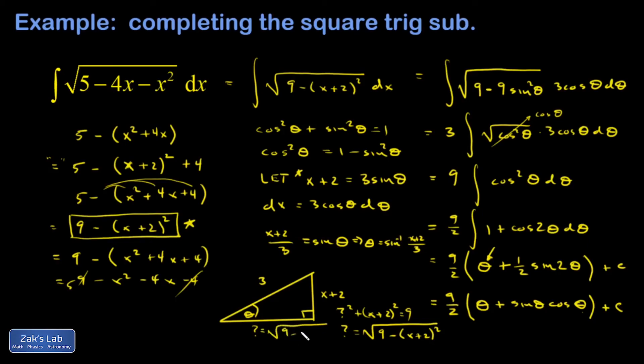That adjacent side is just √[9 - (x + 2)²], or if you like, you could write it the way the original square root was written. So my final answer is going to be (9/2)arcsin((x + 2)/3) plus sin(θ), which is just (x + 2)/3, times the cosine, which is adjacent over hypotenuse.